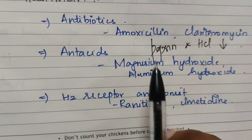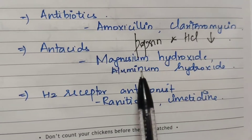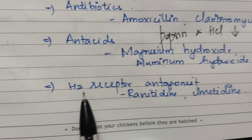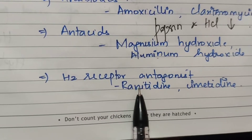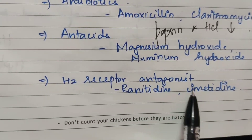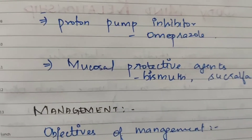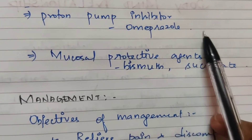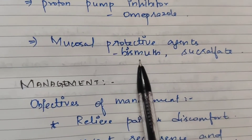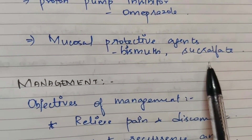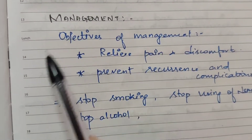Antacids include magnesium hydroxide and aluminum hydroxide. H2 antagonists such as ranitidine and cimetidine are used. Proton pump inhibitors like omeprazole, and mucosal protective agents such as bismuth and sucralfate. Management is important.